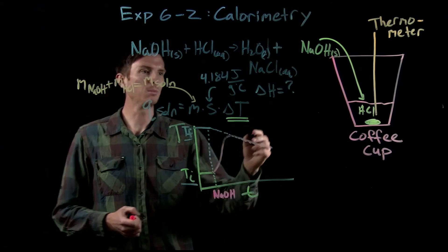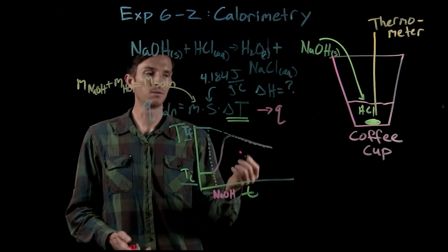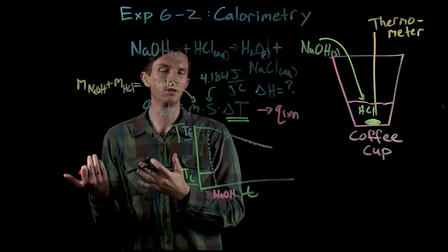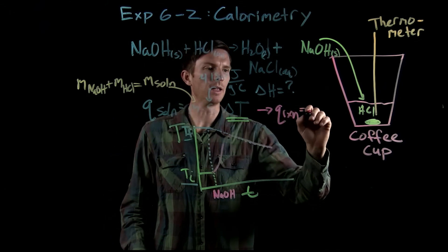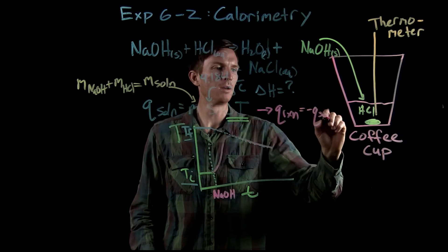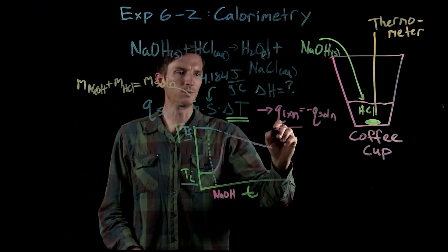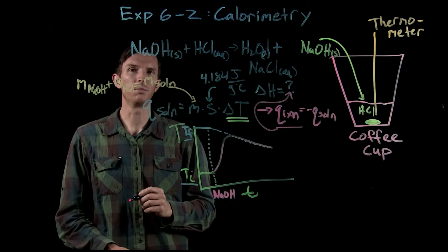The final step is going to be determining our Q of our reaction. And we know that the Q of one piece is equal and opposite to the Q of the other piece, right? If something loses heat, something else has got to gain it. So then this is going to be equal and opposite to the Q of our solution, which gets us to the Q of our reaction, which we can then go ahead and use to calculate the enthalpy.